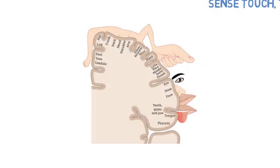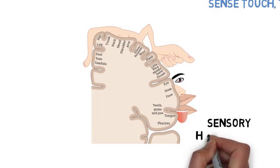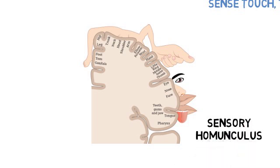Meet the sensory homunculus. This funny-looking figure represents how much brain space is dedicated to processing sensations from different body parts. Notice how the hands, lips, and face are exaggerated? That's because these areas have a high density of sensory receptors and require more brain power to process their sensations.